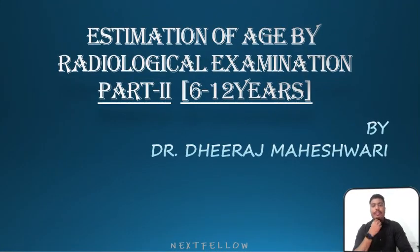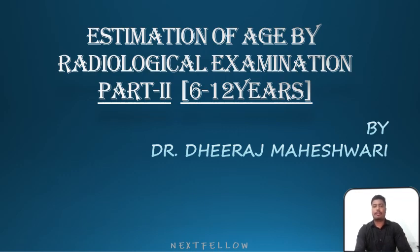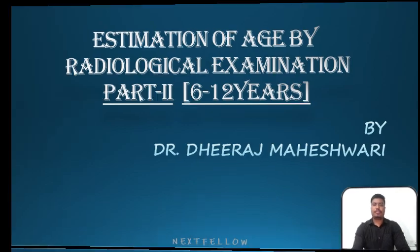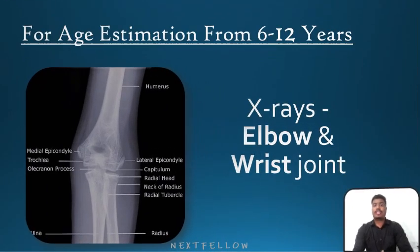Hello everyone. Today we will discuss the estimation of age by radiological examination, part 2 — that is 6 to 12 years. I am Dr. Dheeraj Maeshwari. For age estimation from 6 to 12 years, the x-rays which are considered are the elbow joint and the wrist joint.